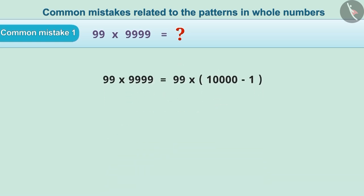Sometimes, with the help of patterns, we can represent it as 99 multiplied by 10,000 minus 1. But while solving it, 99 is multiplied by 10,000 and 1 is subtracted from the product.